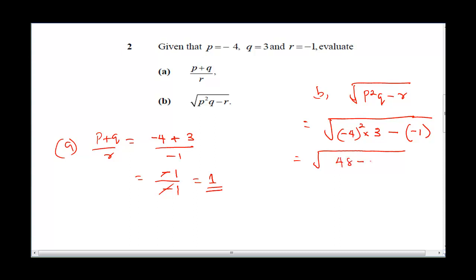This is going to give us 48, so minus times minus is going to be plus 1. We'll have square root of 49, and that's going to give us 7. So that's the final answer in option b.